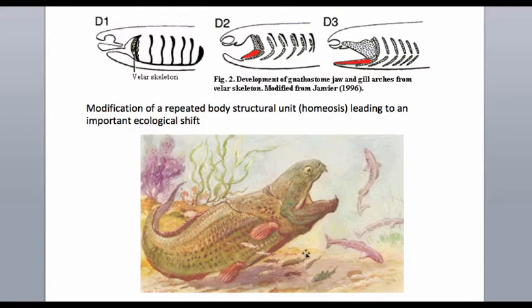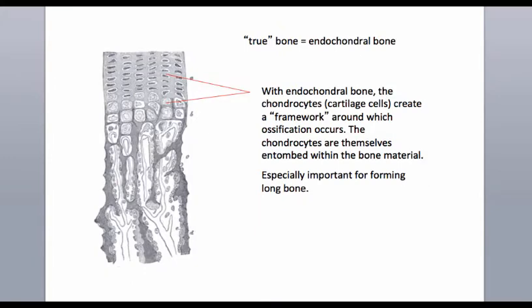Moving into the gnathostomes — the picture at the bottom depicts the placoderm, the kind of gnathostome we no longer have today, which went extinct during the Paleozoic. The top of the slide refers to the homeotic event that gave rise to the earliest jawed vertebrates: the skeletal element supporting the gill arch moved forward and became the lower jaw of the earliest gnathostomes. True endochondral bone was apparently lacking in placoderms and ancient armored jawless fishes — they had bony plates but not the kind of bone good for supporting body mass. True bone was the innovation that allowed vertebrates to make their transition onto dry land.